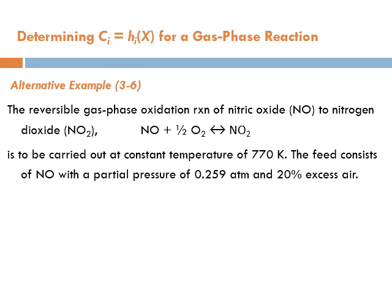Let's see what this problem is all about. We have the reversible gas phase oxidation reaction of nitric oxide to nitrogen dioxide, NO₂, to be carried out at a constant temperature of 770 Kelvin. We're converting nitrogen oxide or nitric oxide to nitrogen dioxide using oxygen, which is basically coming from air.